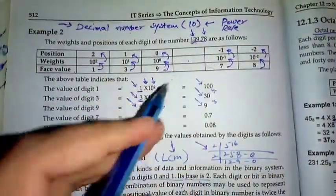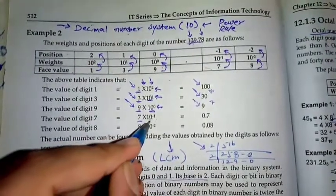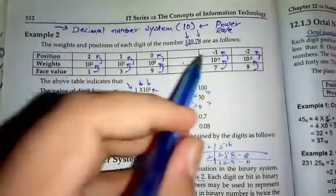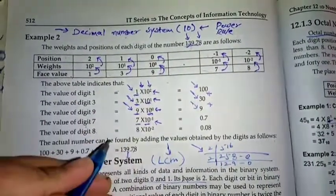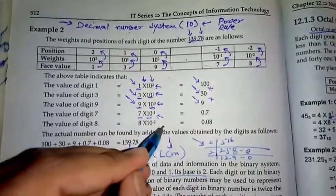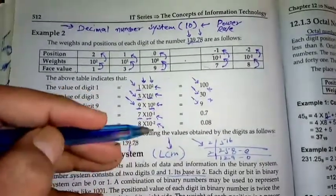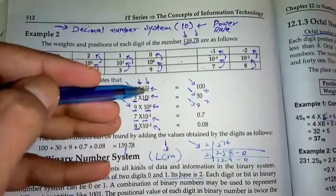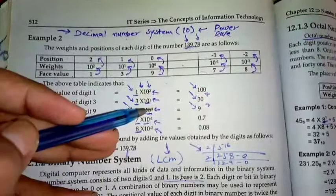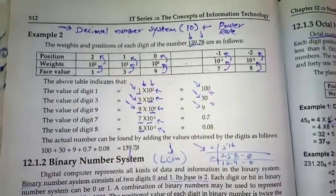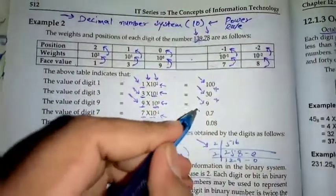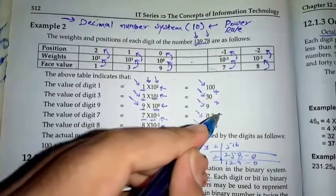Next value of digit 7: 7 multiplied by 10 to the power minus 1. Next value of digit 8: 8 multiplied by 10 to the power minus 2. So here we are going 2, 1, 0 in the backward. Add them.